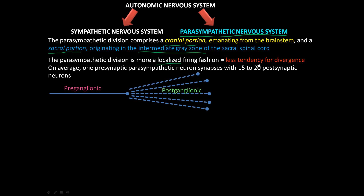There's less tendency for divergence. Remember what divergence is: if you have a preganglionic cell in the autonomic nervous system, it diverges the signal onto 1, 5, 10, more than 100 in the sympathetic nervous system to the postganglionic cells. When this preganglionic cell is triggered, an electrical impulse comes down and the axon releases neurotransmitters into the synaptic space.